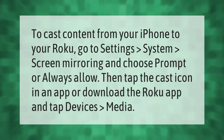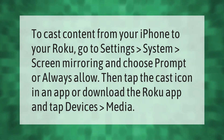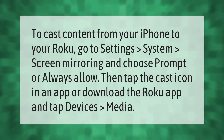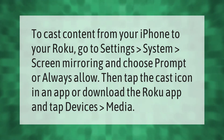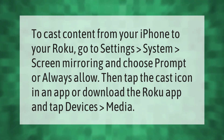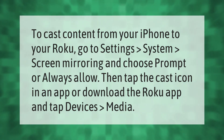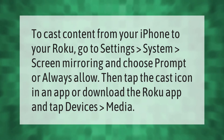To cast content from your iPhone to your Roku, go to Settings, then System, then Screen Mirroring, and choose Prompt or Always Allow. Then tap the cast icon in an app, or download the Roku app and tap Devices, then Media.